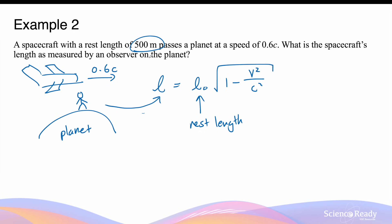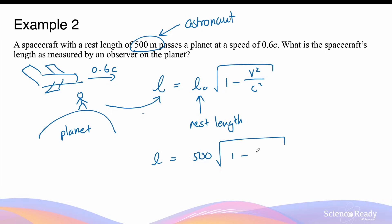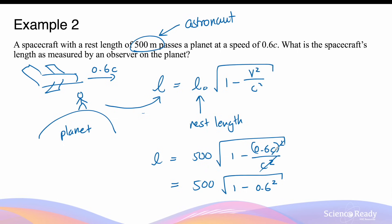The 500 meters is also the length measured by an astronaut or crew member on board the moving spacecraft. We can find L, the contracted length measured by a stationary observer, by multiplying 500 by the square root of 1 minus 0.6c squared divided by c squared. The c squared cancels, simplifying the expression to 500 multiplied by the square root of 1 minus 0.6 squared — the square still applies to 0.6. This gives a contracted length of 400 meters.